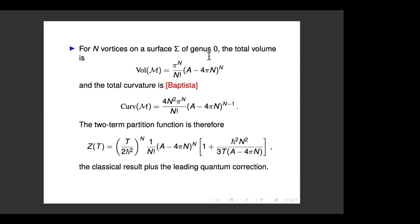We need the volume — I've already shown this formula — and we need the total curvature. About 10 years ago, Jevgeni Baptista, a former student of mine, independently worked out the total curvature using a cohomological calculation. He found it's almost the same as the volume formula but with N−1 factors of (A−4πN) instead of N, plus an additional factor of N².